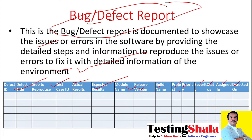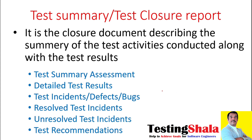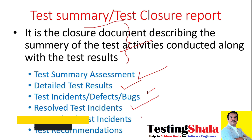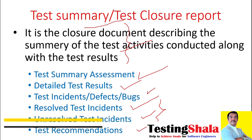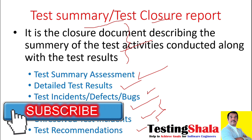The next type of test documentation is the test summary or test closure report, which is the last document normally created by the testing team. In this documentation, we give a complete summary of the testing activities performed and the results of those activities. We define what incidents, defects, or bugs were logged during the overall testing journey, which are resolved and which are still unresolved. We also provide the recommendation from the testing team as to whether we should go for the given release or not certify it.